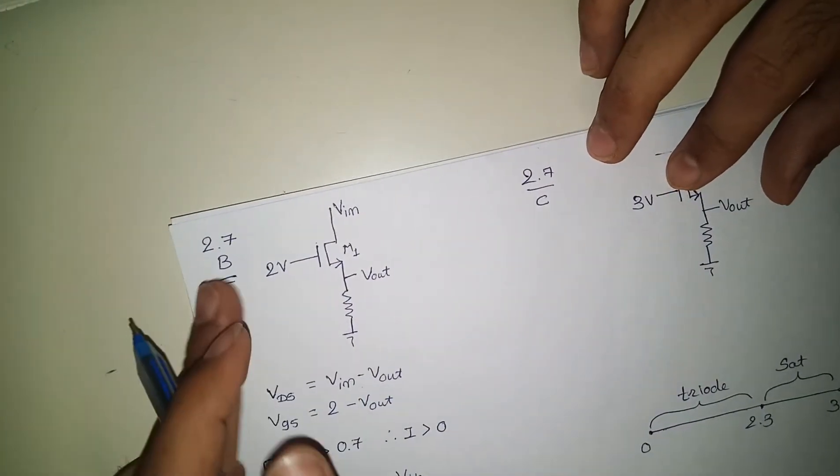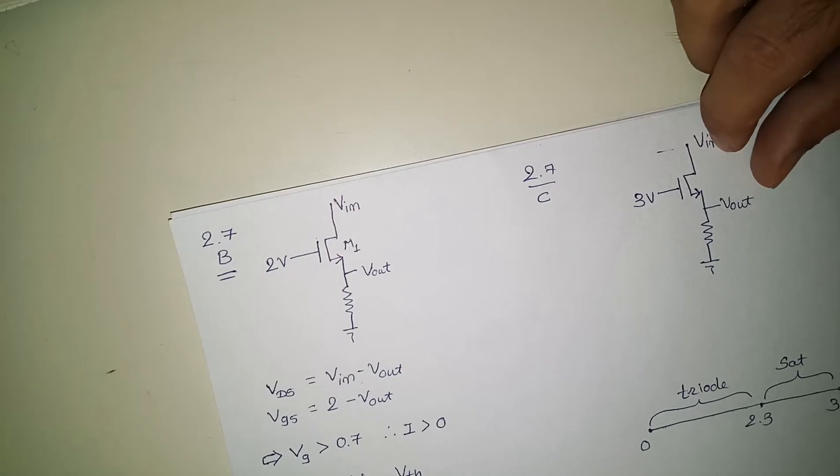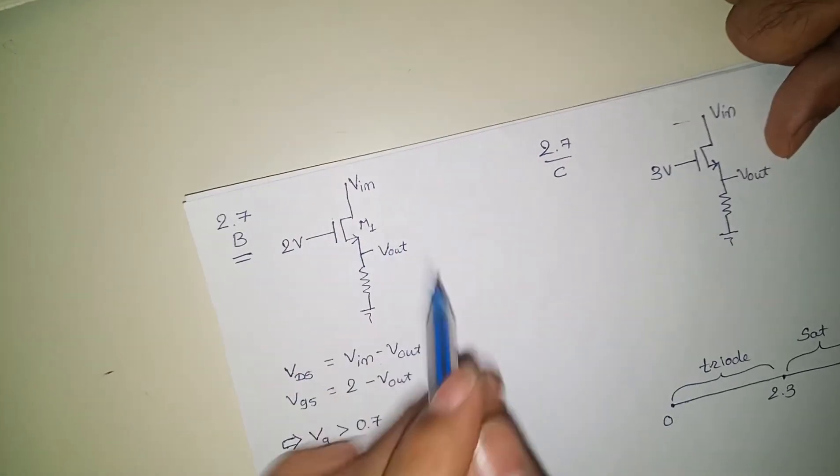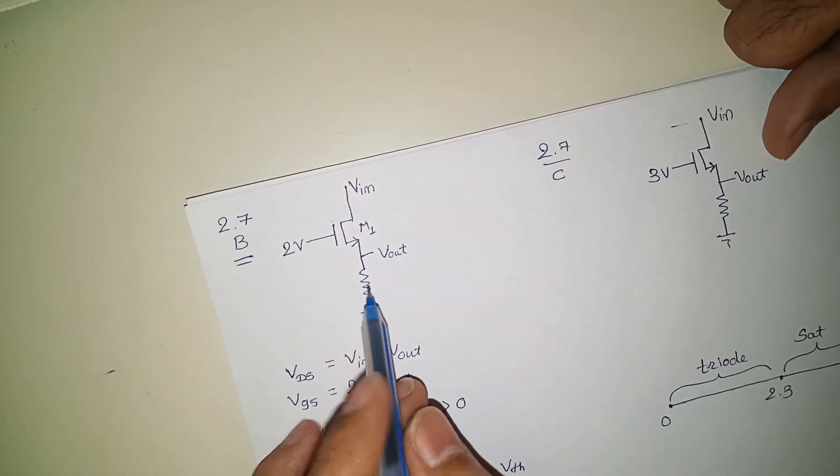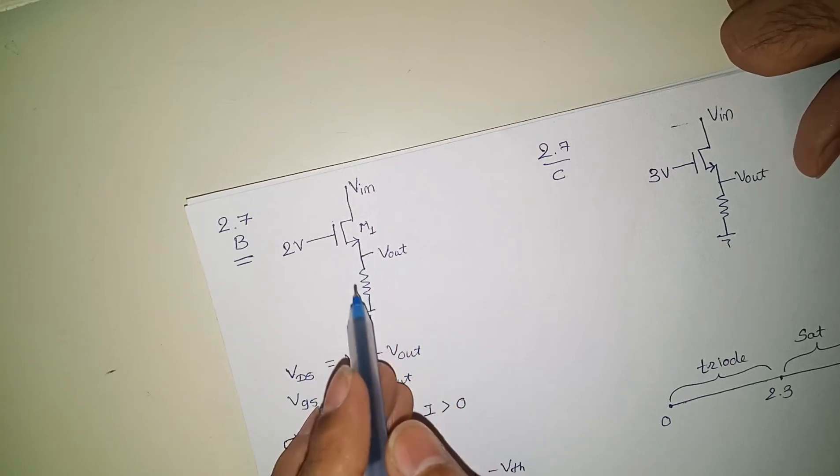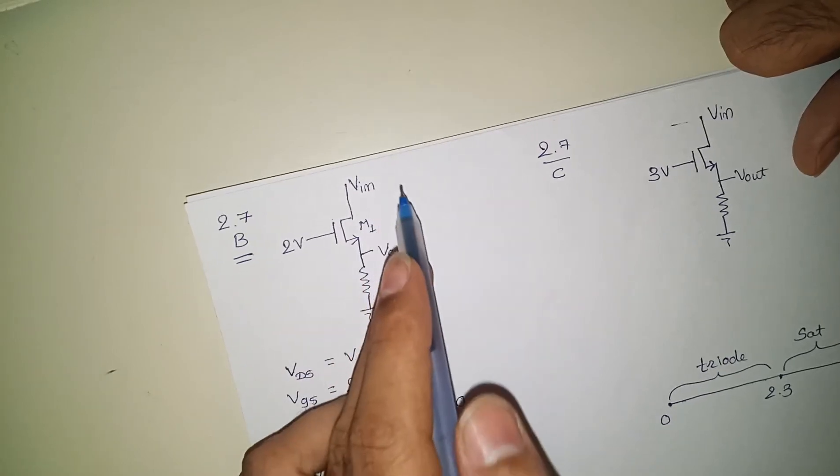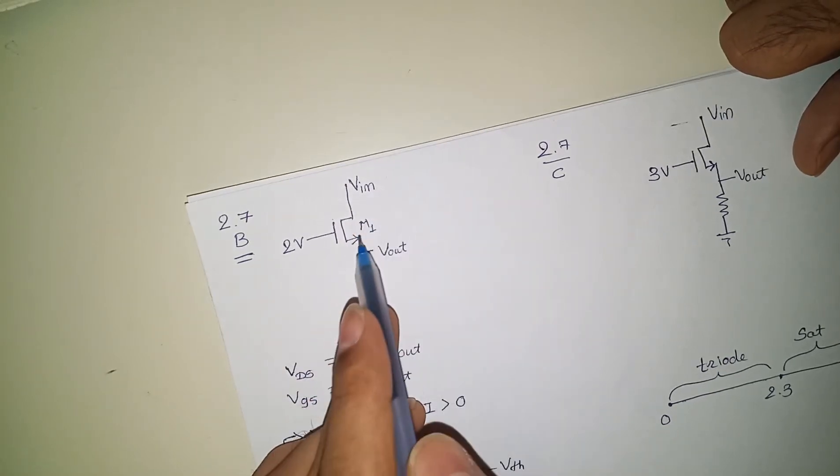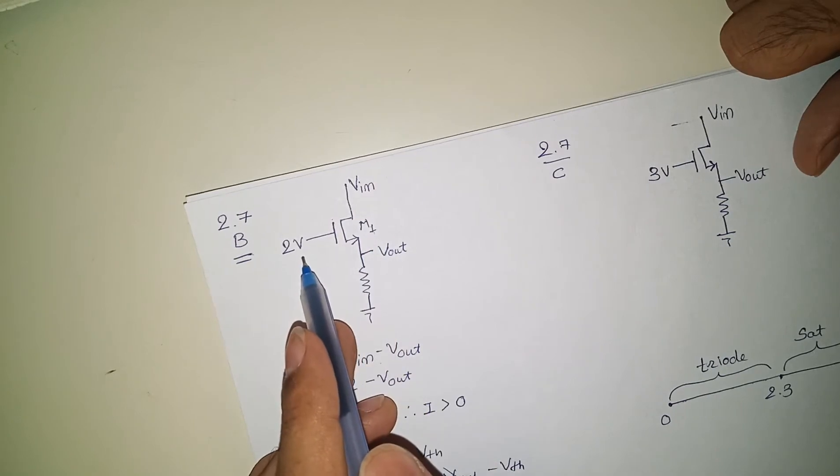Okay, we will see the solution of 2.7 B and C together. If you read the circuit of part B, you will get this circuit in which Vin is variable. M1 has 2 volts connected to the gate, Vout is here at the other terminal of R1. Here also R1.